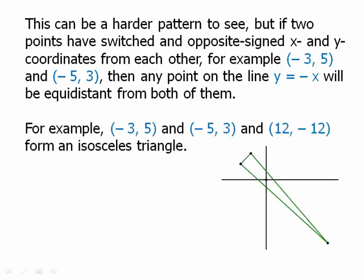For example, (−3, 5), (−5, 3), and (12, −12) form an isosceles triangle, because (12, −12) is a point on y = −x, and any point on the mirror line is equidistant from a point and its reflection.